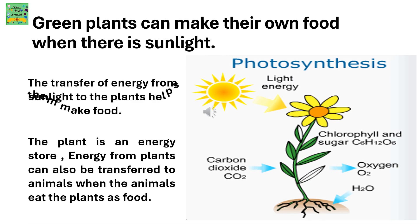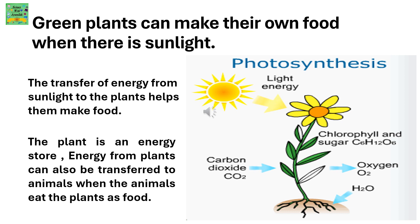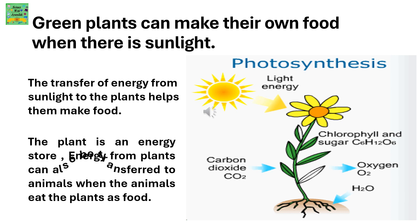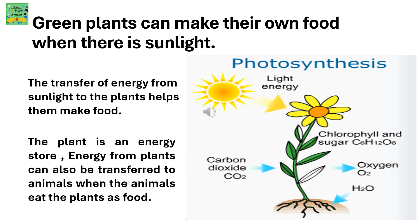Green plants can make their own food when there is sunlight. The transfer of energy from sunlight to the plants helps them make their own food. The plant is an energy store. Energy from plants can also be transferred to animals when the animals eat the plant as food.